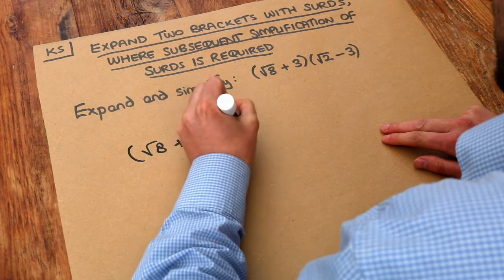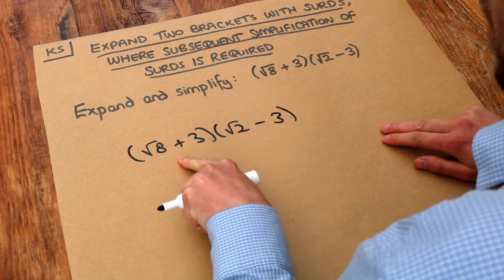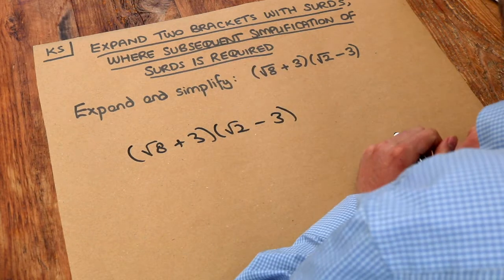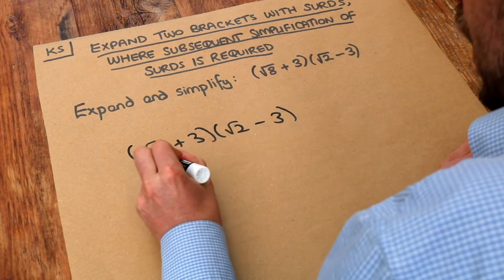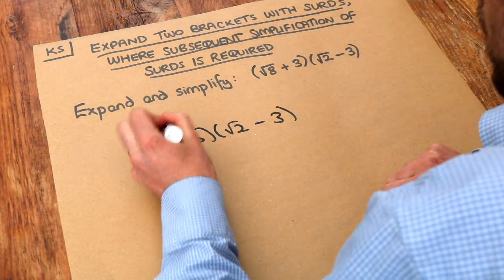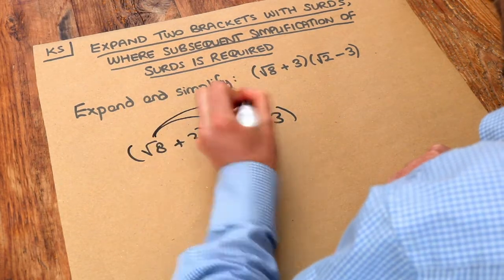We multiply each thing in the first bracket by each thing in the second bracket. That's how we expand two brackets. So this first thing in this first bracket we're going to multiply by each of the things in the second bracket. Let's do that first.